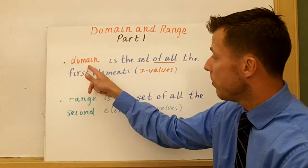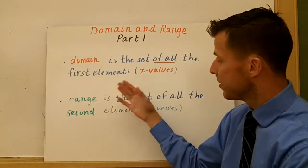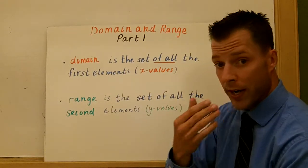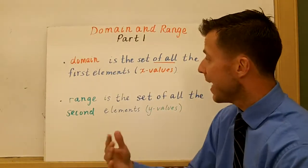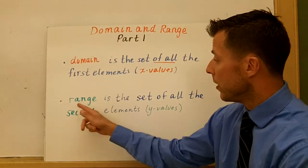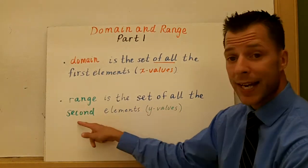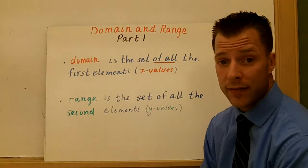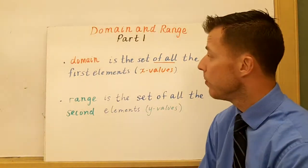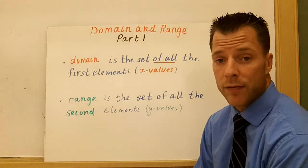So what is domain? Domain is the set of all first elements in an ordered pair, or the x values. All the x values that are going to work. The range is the set of all second elements, or the y values. We spoke a little bit about domain and range in our functions video.